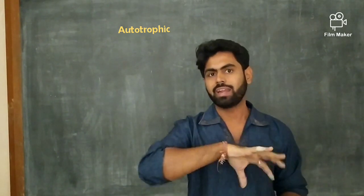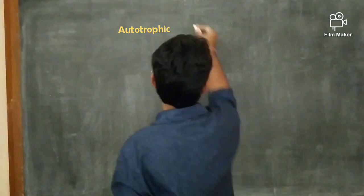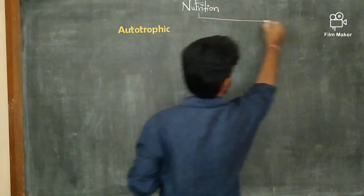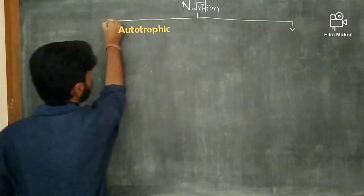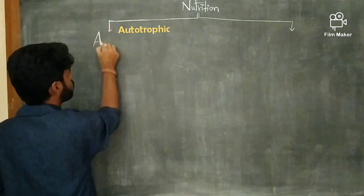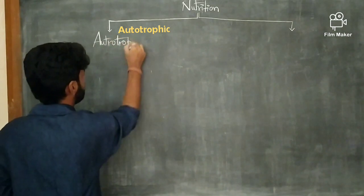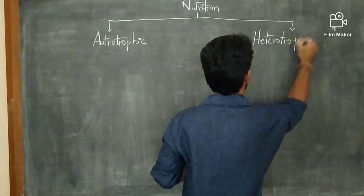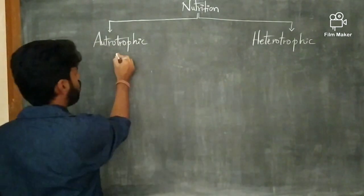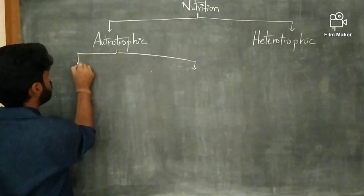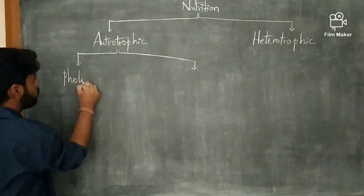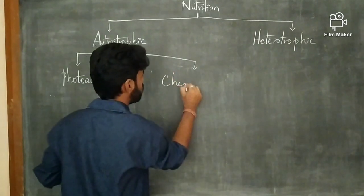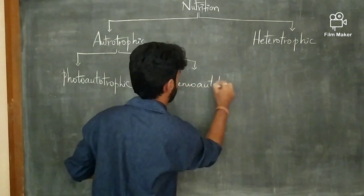So let us classify all the types of nutrition so that we can understand the entire sequence. Nutrition can be divided into two types: autotrophic nutrition and heterotrophic nutrition. In autotrophic, it is again divided into two types: one is phototrophic and the second one is chemo-autotrophic.